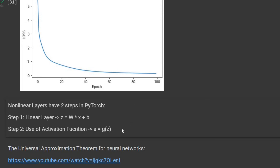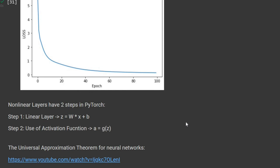There is a theorem in AI stating that if we have a two-layer neural network where the first layer is nonlinear and the second layer is linear, with enough neurons we should be able to model any continuous nonlinear function. So with the structure we defined — first layer nonlinear, second layer linear — with enough neurons we can model any continuous function. I highly recommend you watch the linked video that shows with a simple example how just two layers can model any nonlinear function. The universal approximation theorem is probably the most important theorem in neural networks.